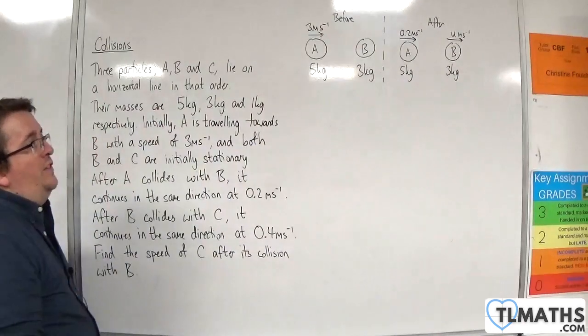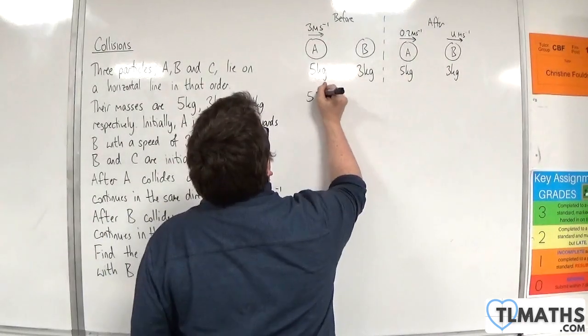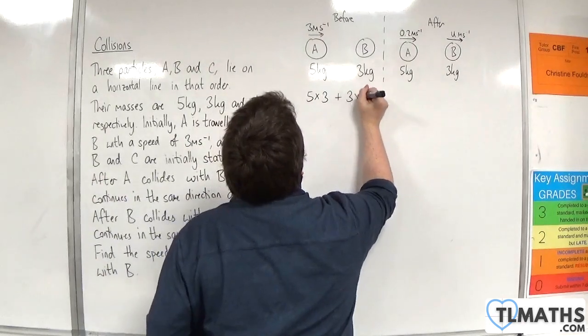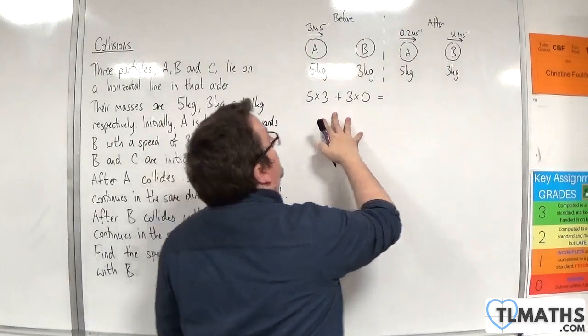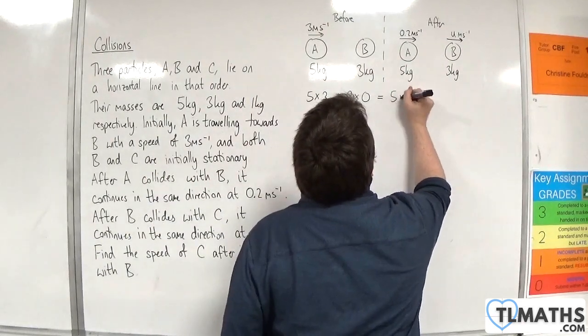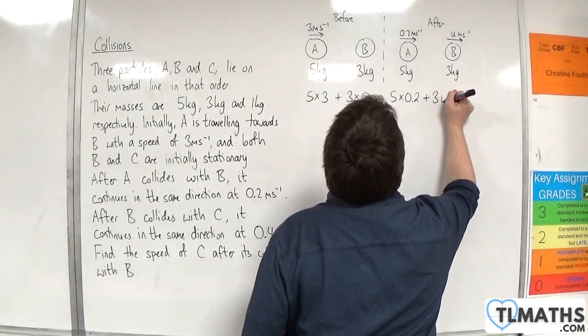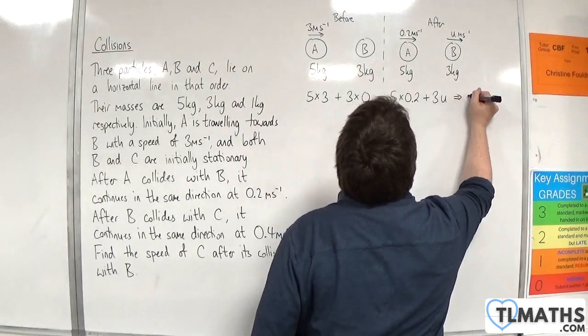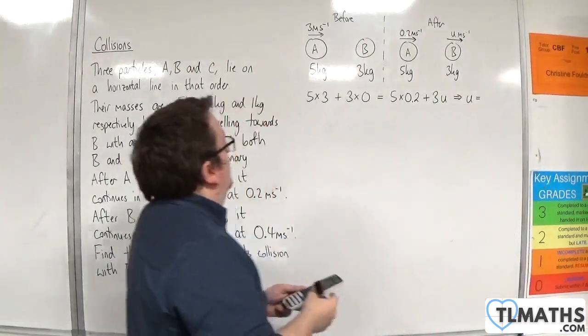Using the conservation of linear momentum, we must have 5 times 3 plus 3 times 0, that's the total momentum beforehand, must be equal to 5 times 0.2 plus 3 times U.